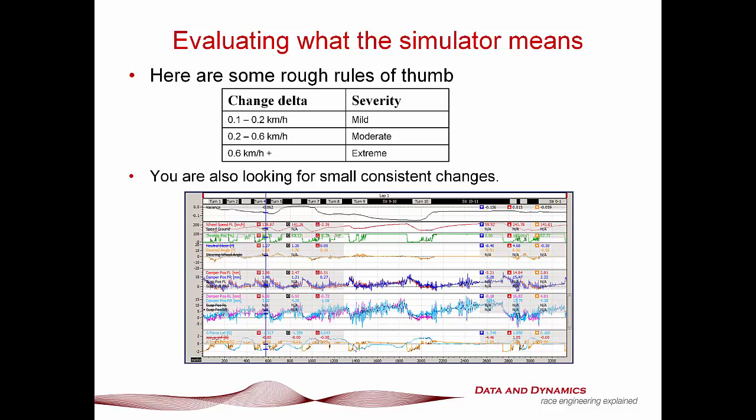It's really important to review this in terms of evaluating what you're getting back from the simulator. Just remember — changes on the simulator will always be smaller than on the actual car. Here are some good ideas of what to look for: 0.1 to 0.2 km/h is a mild change; 0.2 to 0.6 km/h is a moderate change; 0.6 km/h or more is a hallelujah moment — oh my word, I have really screwed up here. The other thing is you're always looking for small and consistent changes.